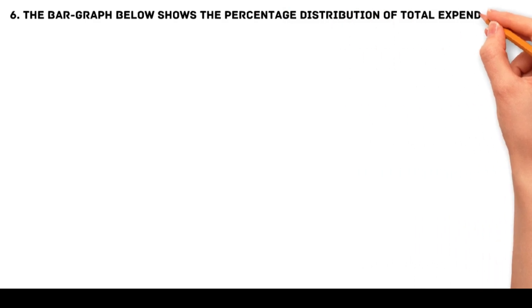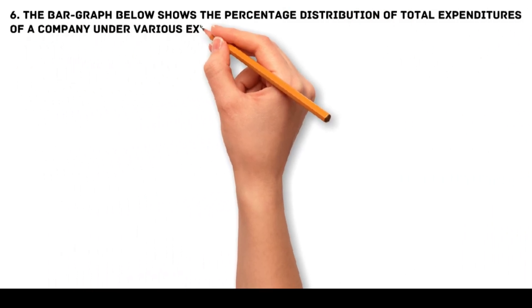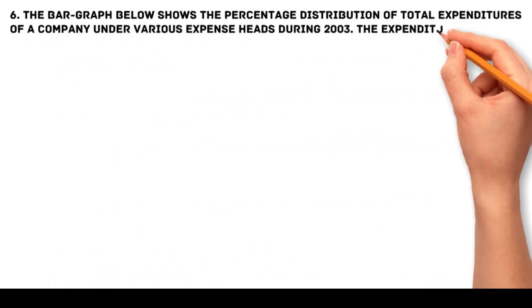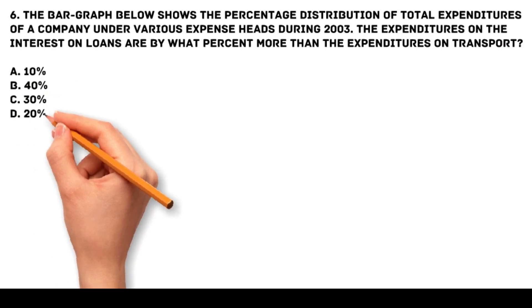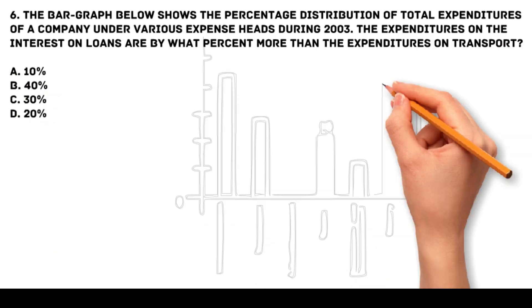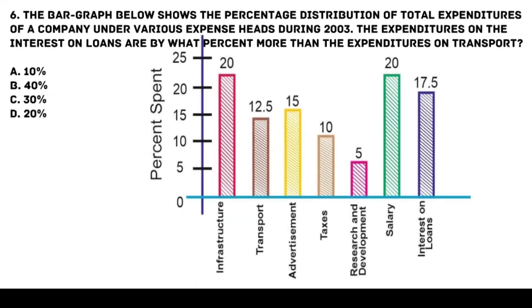Problem 6: The bar graph below shows the percentage distribution of total expenditures of a company under various expense heads during 2003. The expenditures on interest on loans are by what percent more than the expenditures on transport? Options: a. 10%, b. 40%, c. 30%, d. 20%.